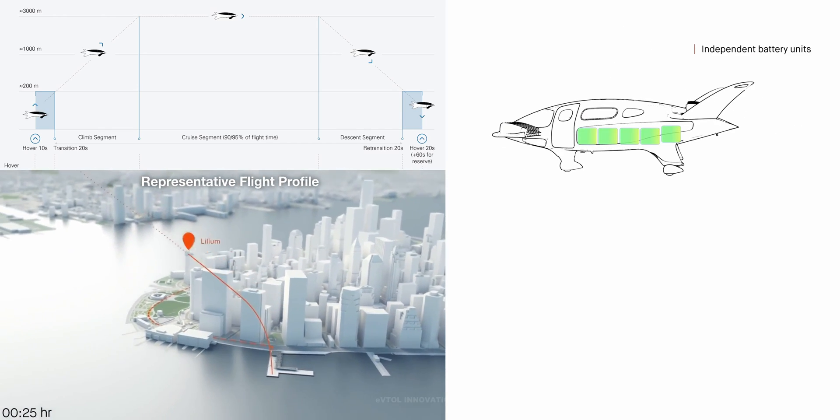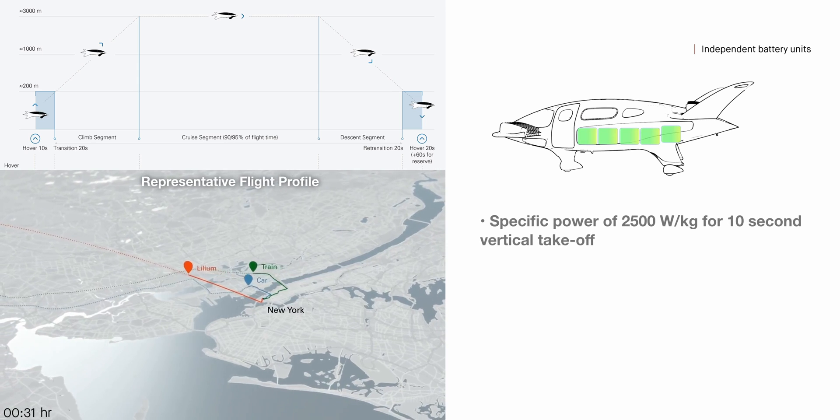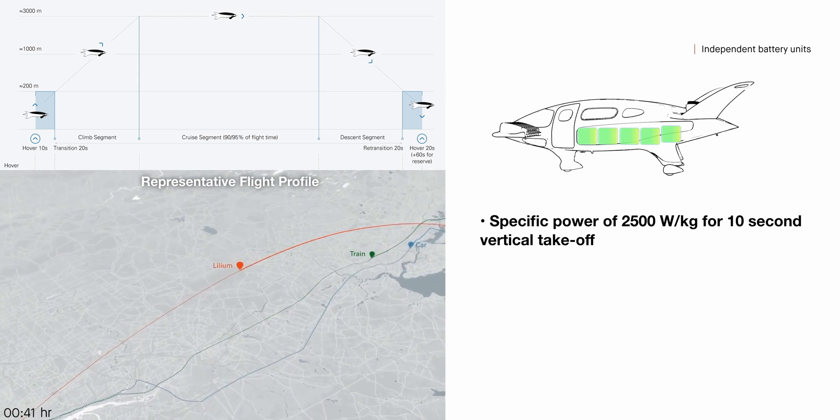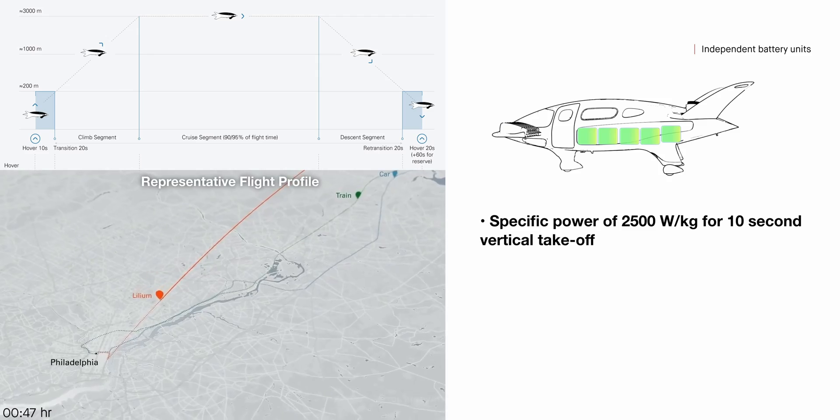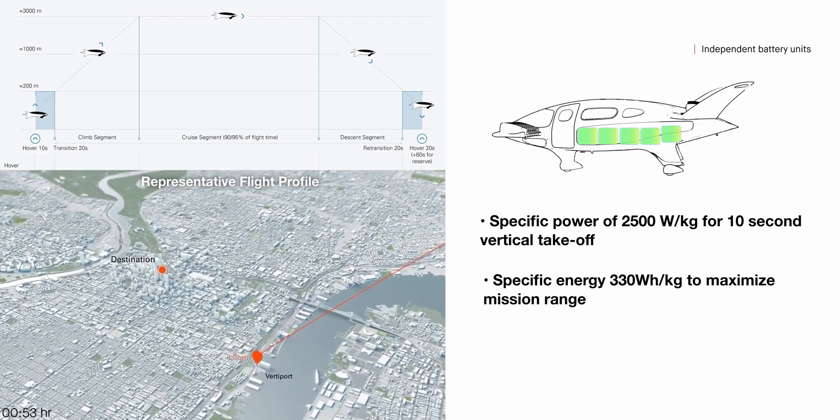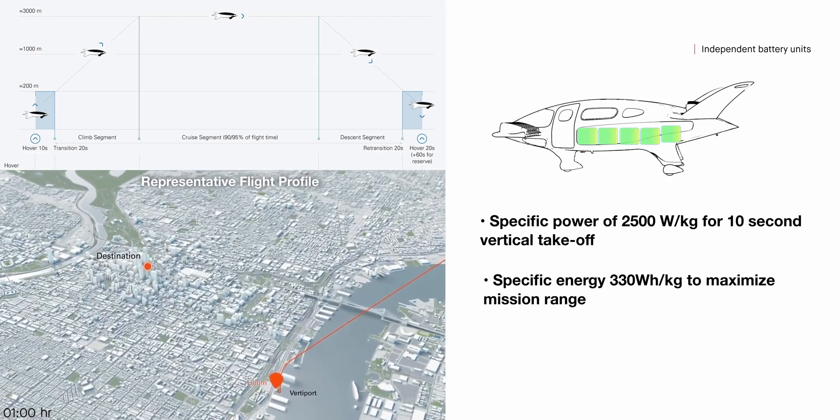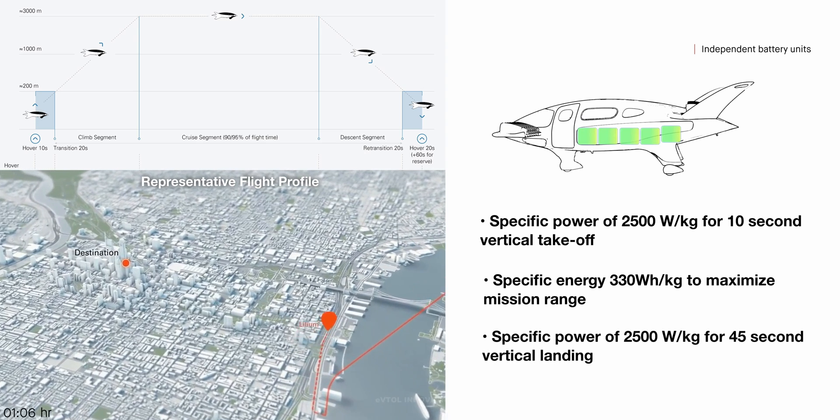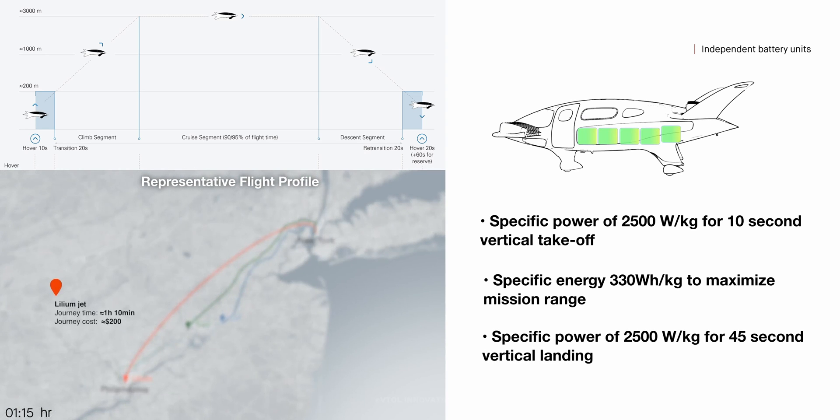A suitable battery cell needs to deliver a high average specific power of 2,500 watts per kilogram for a short 10-second vertical takeoff, deliver high specific energy to maximize mission range, and deliver a high average specific power of 2,500 watts per kilogram for the 45-second landing phase.